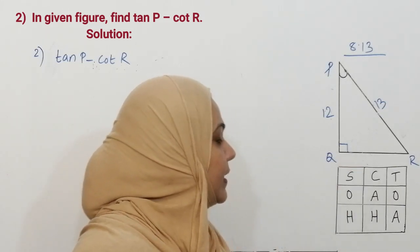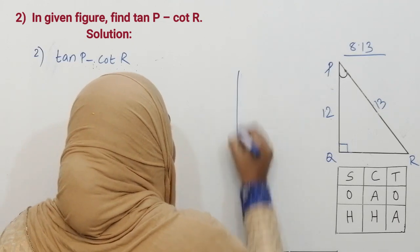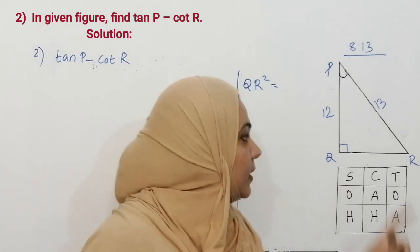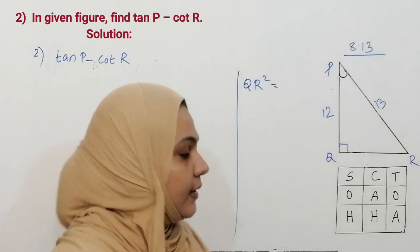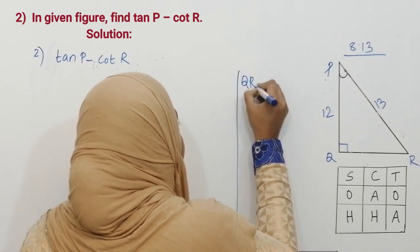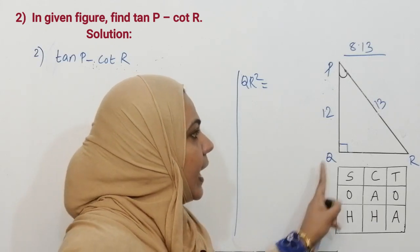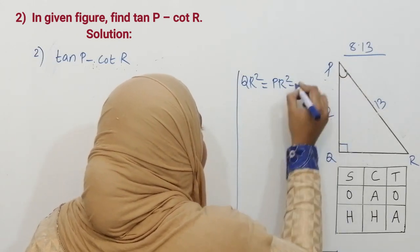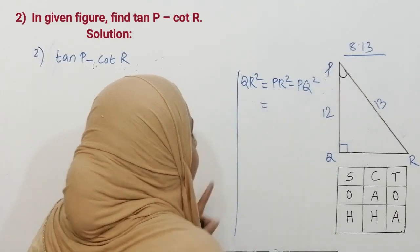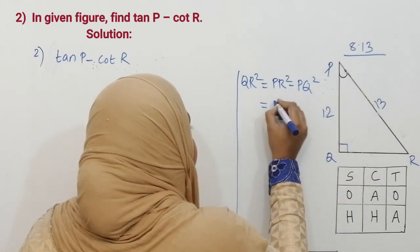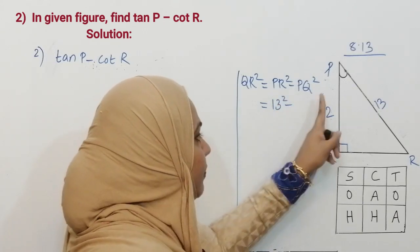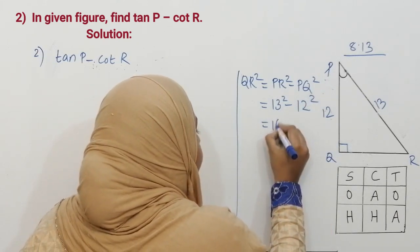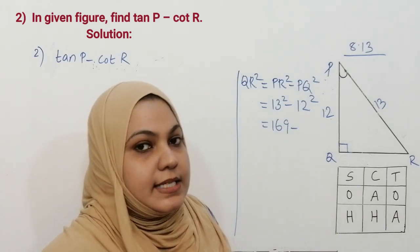By the Pythagoras theorem we can find QR. The formula for base squared is hypotenuse squared minus height squared. So QR squared equals PR squared minus PQ squared. PR is 13, so 13 squared is 169; PQ is 12, so 12 squared is 144. 169 minus 144 is 25.